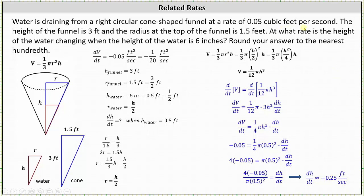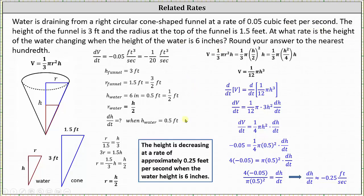So to answer the question, at what rate is the height of the water changing when the height of the water is six inches? Our answer is the height is decreasing at a rate of approximately 0.25 feet per second when the water height is six inches. As soon as the water height changes, the rate at which the height is decreasing is also going to change. I hope you found this helpful.